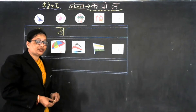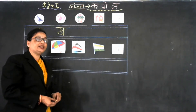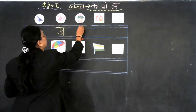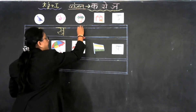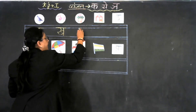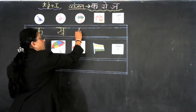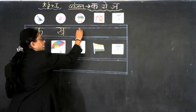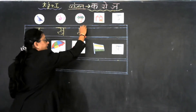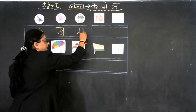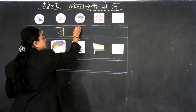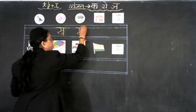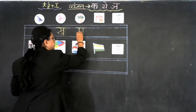And what is the formation of Vyanjan Ga? Now look at the board. First of all we draw a standing line, then make a small circle like this, then another standing line like this, and a clipping line on the top like this.